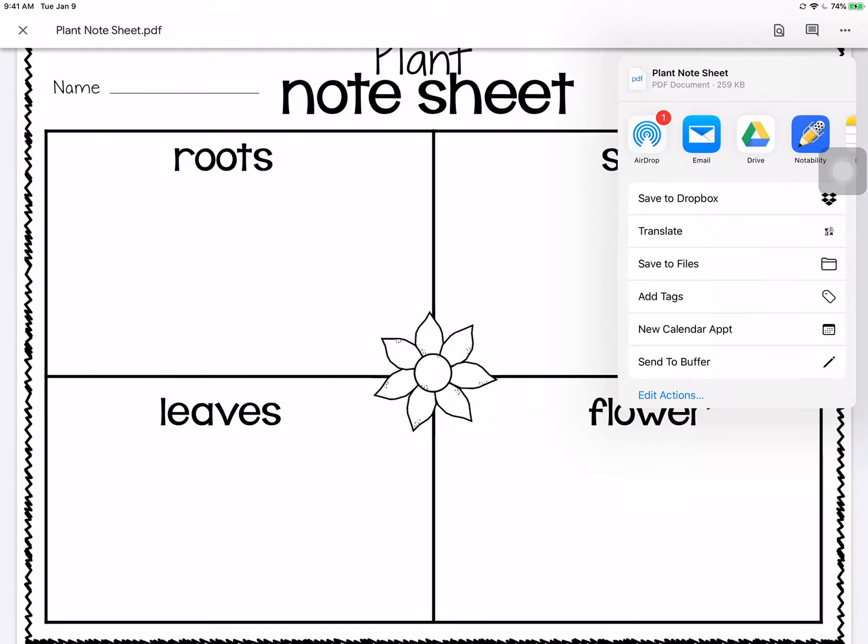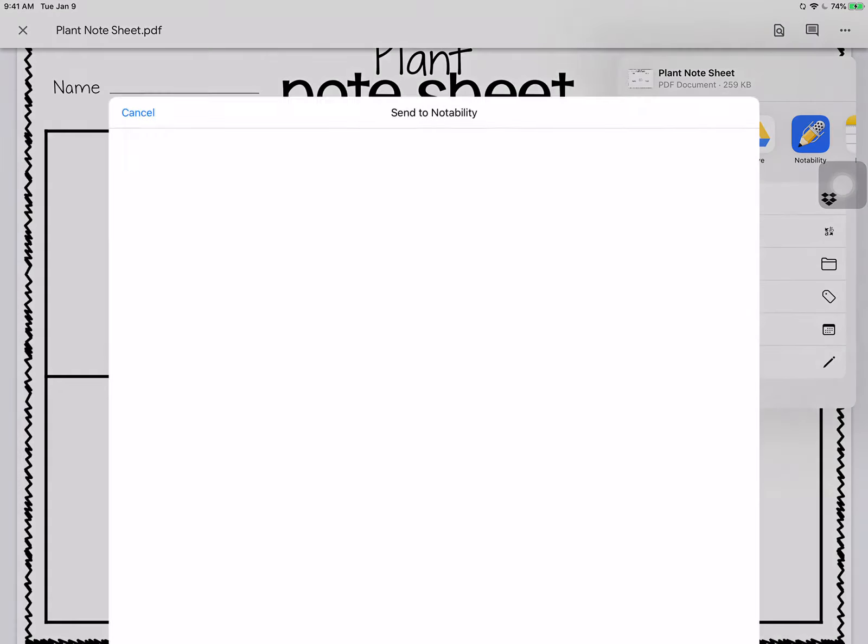Once I've tapped Open In, I should see a list of apps that I can open this PDF in. I'm going to look for Notability right here. If not, you can scroll this list and see the apps that you have. You're going to find Notability. Go ahead and tap that.